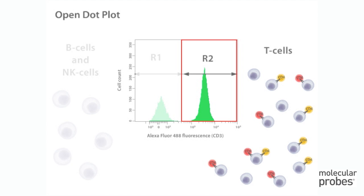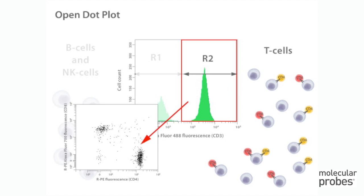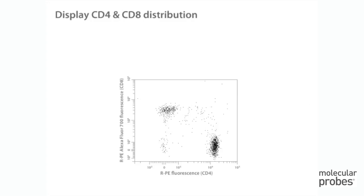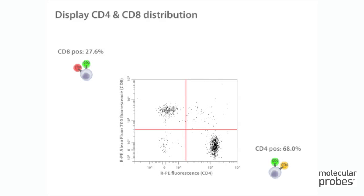To look at CD4 and CD8 cell surface antigens within the T cell population, we create a dot plot gated on the CD3 positive cells in the R2 region from the CD3 histogram. This log scale dot plot shows two parameters at once and displays the relationship between the populations expressing CD4 and CD8. In the CD4 versus CD8 dot plot, you can see four distinct populations. CD8 positive CD4 negative cells represent 27.6 percent of the T cell population. CD4 positive CD8 negative cells represent 68 percent. The CD4 CD8 dual negatives and dual positives each represent about two percent of the T cell population.